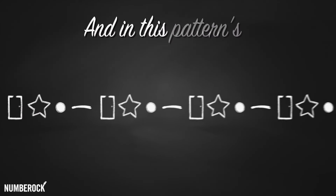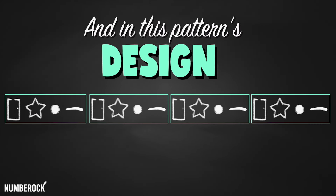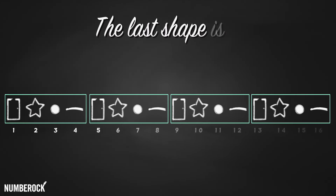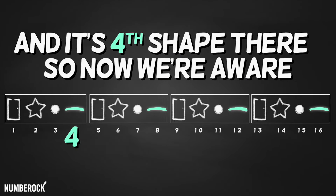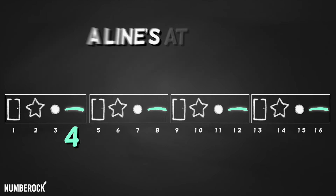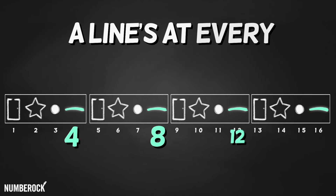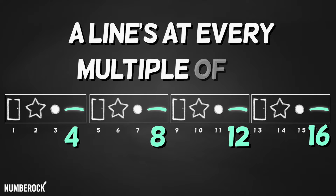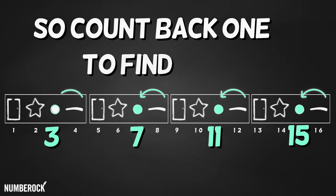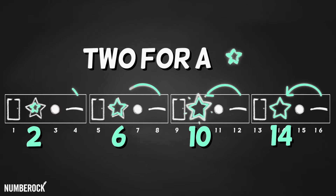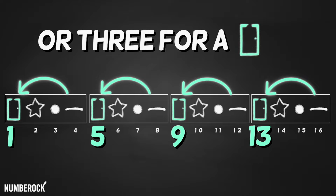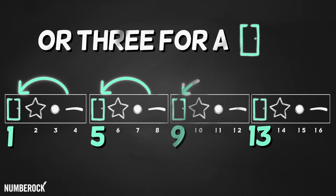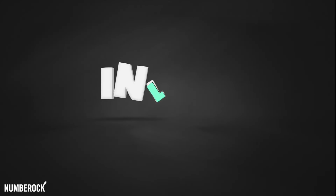And in this pattern's design, the last shape is a line. And it's the fourth shape there, so now we're aware: a line at every multiple of four. So count back one and find a dot, two four, start a three, forward door.